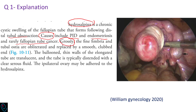Regarding the gross picture, the fimbriae and tubal ostia are obliterated and replaced by a smooth clubbed end. We can see the dilated fallopian tube with obstructed distal ends. The ballooned thin walls of the elongated tubes are translucent, and the tube is typically distended with clear serous fluid.